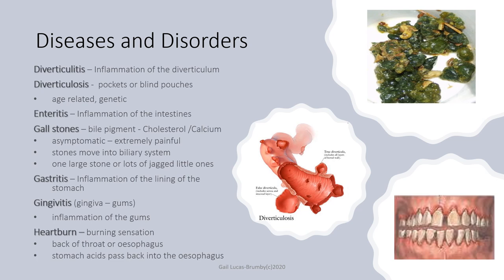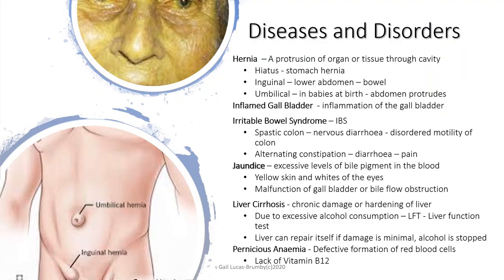Gastritis is inflammation of the lining of the stomach. Gingivitis — gingiva meaning gums — is inflammation of the gums. Heartburn is a burning sensation in the back of the throat or oesophagus where stomach acids pass back up through the cardiac sphincter. A hernia is a protrusion of an organ or tissue through a cavity in the body — the hiatus hernia is in the stomach area, the inguinal in the lower abdomen, and the umbilical hernia is usually in babies where the abdomen protrudes.